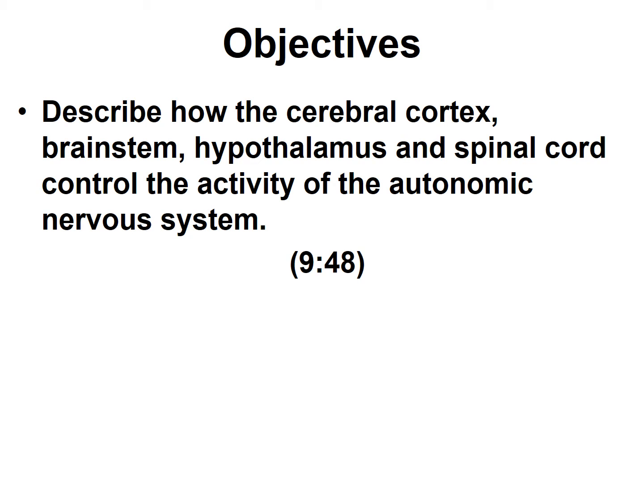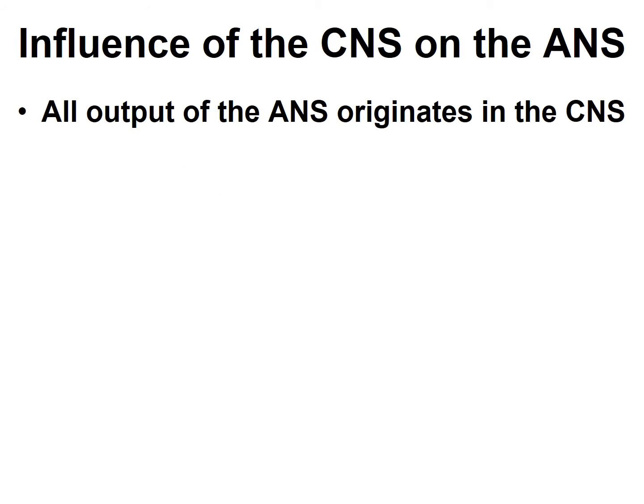Our final objective is to describe how the cerebral cortex, brainstem, hypothalamus, and spinal cord control the activity of the autonomic nervous system. At one time, it was thought that the autonomic nervous system worked all on its own — that it had autonomy. In fact, that's where the name autonomic nervous system comes from. Autonomy means freedom from external control or influence, and it was thought that the autonomic nervous system basically worked all on its own.